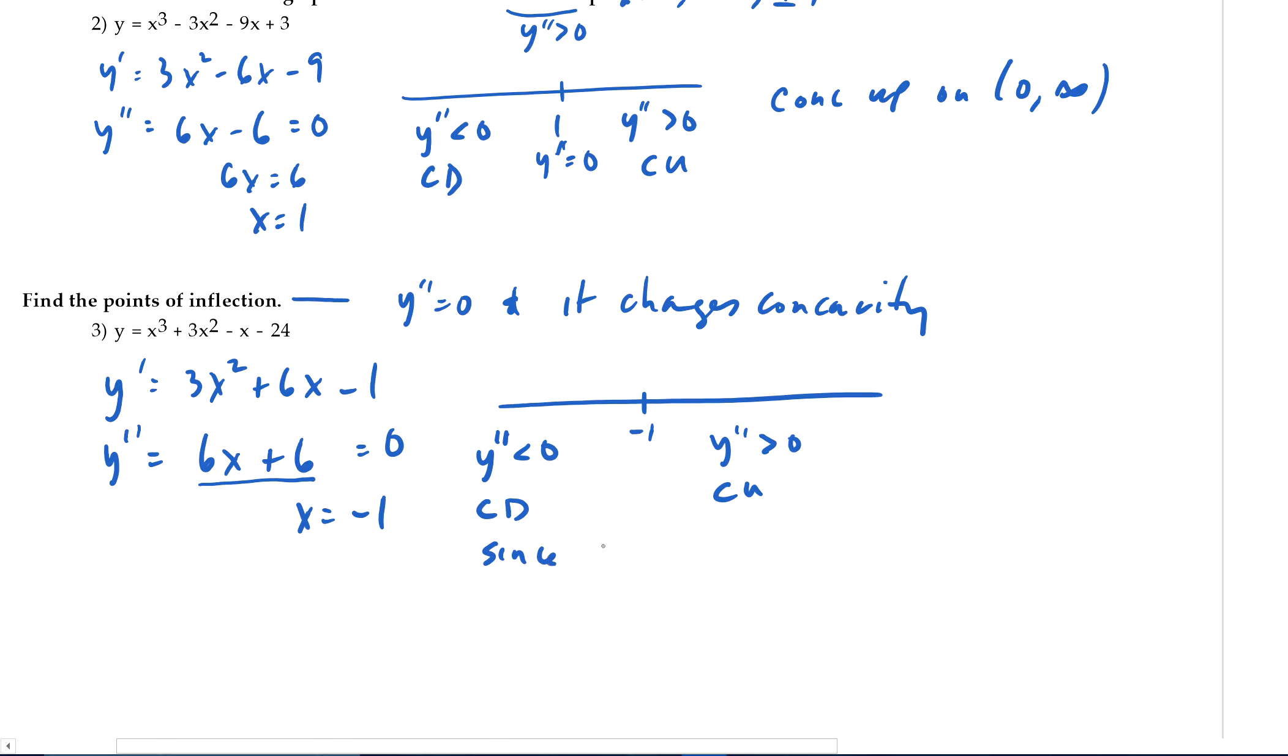So since y double prime at negative 1 equals 0 and y double prime changes sign at x equals negative 1, so x equals negative 1 is, well, it's not right like that. Since it asks for the point of inflection, negative 1 comma whatever is a point of inflection. And what is negative 1 for the y value? It's going to be, let's see, negative 1 plus 3 is 2 plus 1 is 3 minus 24 is negative 21.